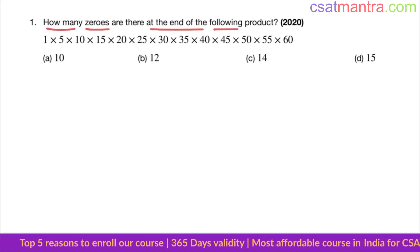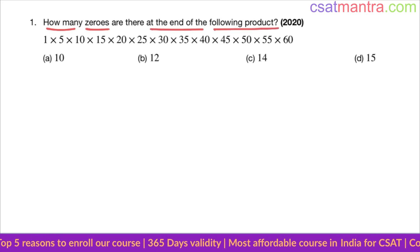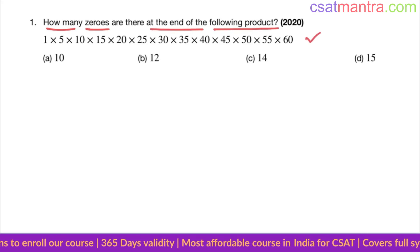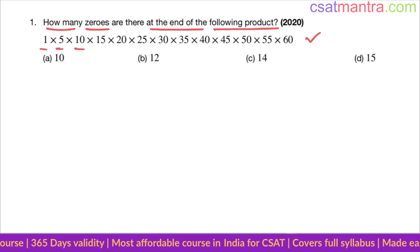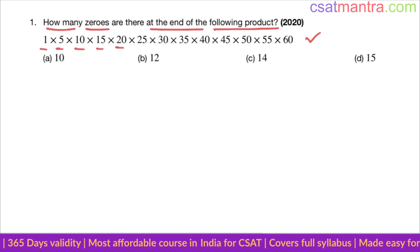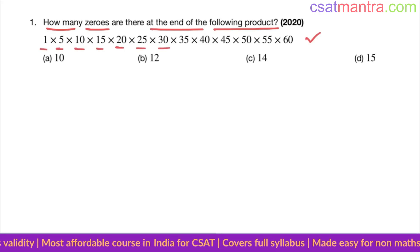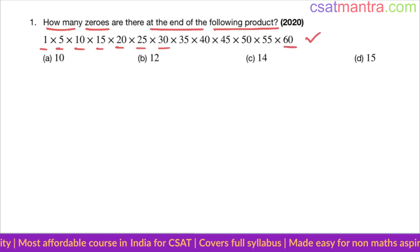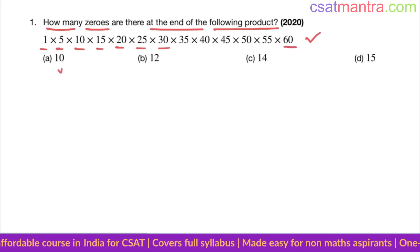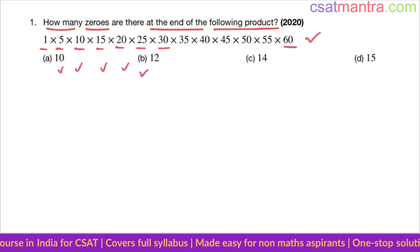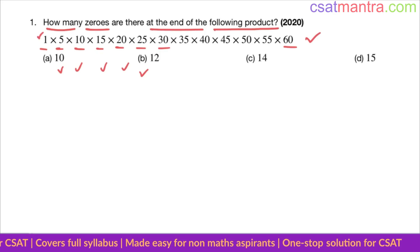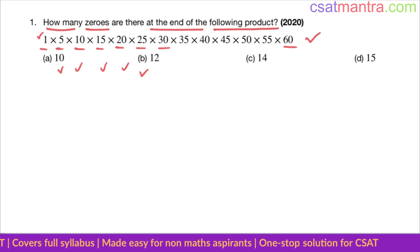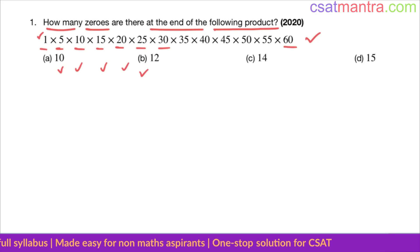If you observe this product, there is a pattern: 1, 5, 10, 15, 20, 25, 30 — like this up to 60. The difference between terms is 5. If you leave the 1, it doesn't make any difference. So the difference is 5, and there is a clear pattern in this product.